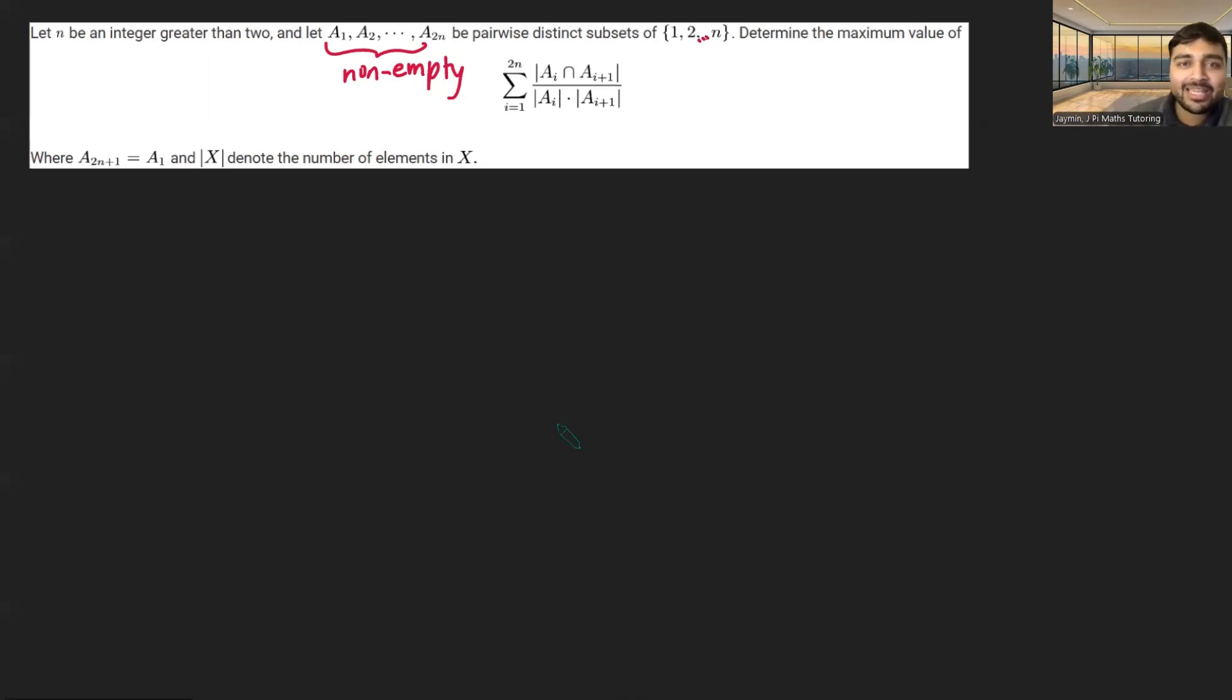n is an integer greater than 2, and we have the sets a1, a2, all the way up to a2n, which are pairwise distinct, and they're all subsets of the integers 1 up to n.